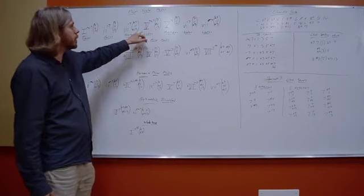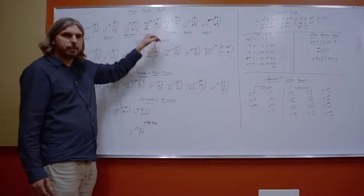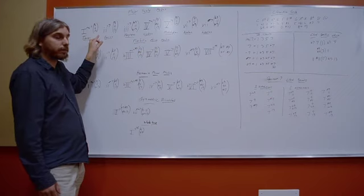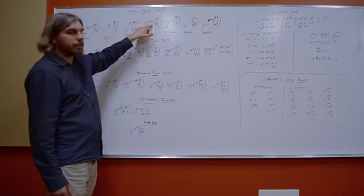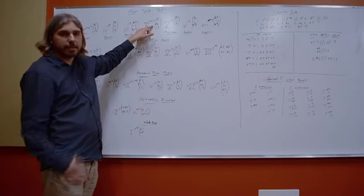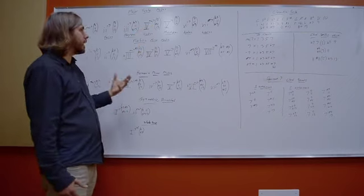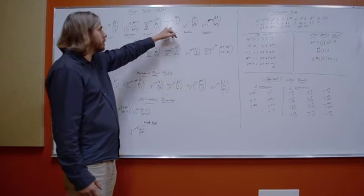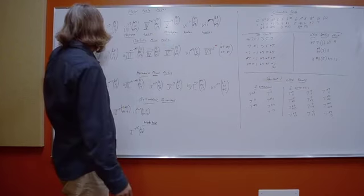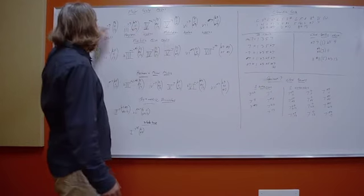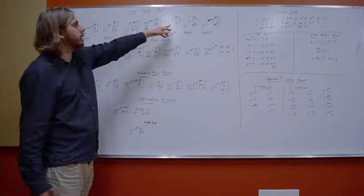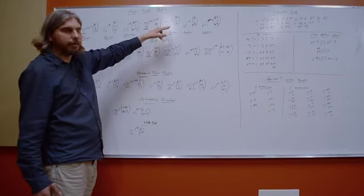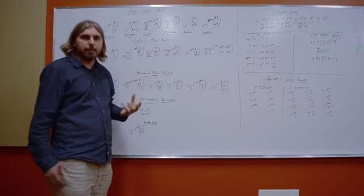Next we have the Lydian mode, which is a major 7 chord with a 9, sharp 11, and 13. Looking back at the Ionian mode — major 7 with a natural 9, 11, and 13 — the characteristic note for Lydian is going to be the sharp 11. That's the pitch that gives the character sound of that mode. Next we have the Mixolydian mode with a natural 9, 11, and 13. The extensions of Ionian and Mixolydian are the same; the note that defines the characteristic of Mixolydian is the flat 7. That's going to be the key note in making that mode come alive.